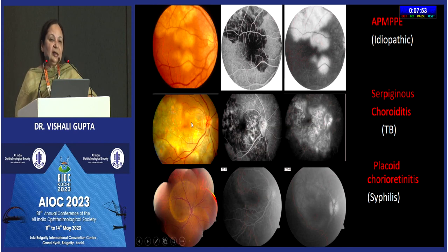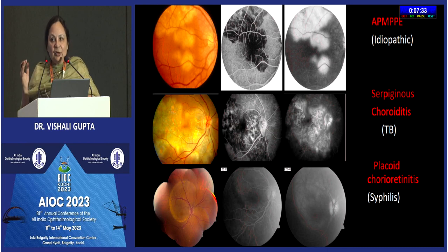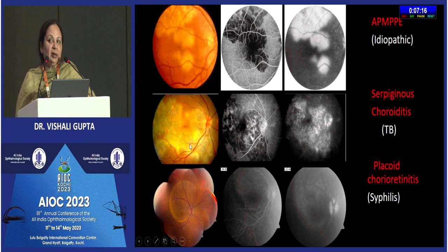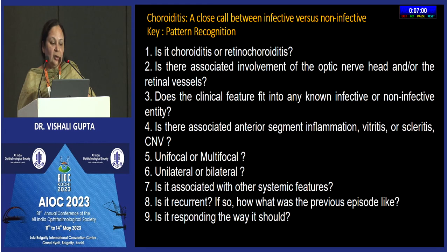They all look similar but there are very important imaging and clinical biomarkers you can pay attention to. If you look at a patient with syphilis and think it is AMPPE and do not treat it, that is a problem. If you see serpiginous and think it is AMPPE and do not suspect infection, that is again a problem. If you see AMPPE and think it is TB and unnecessarily treat with anti-TB drugs, that is also a problem. So how do we approach every patient of chorioretinitis?